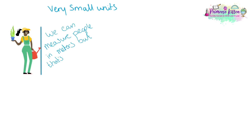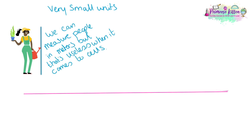In biology we can work with some very small units, so it is important that you understand the relationship between these and how to convert between them. We can measure people and other large objects in metres, but that is useless when we are talking about very small things. Here is our scale, starting at the big end with one millimetre. If you can't visualise that, grab a ruler and look at it on your desk while we go through this.